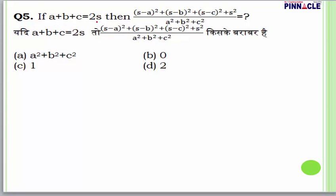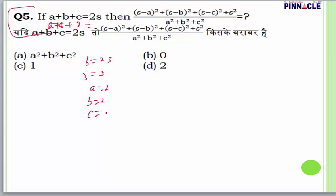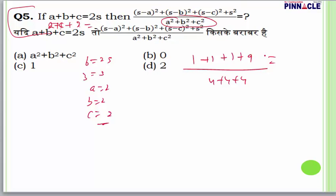Question number 5: If a+b+c = 2s, find the value of the expression. Put A=2, B=2, C=2, then 2+2+2=6=2s, so s=3. Then s−a = 3−2 = 1, (s−a)² = 1; s² = 9. In denominator, a² = 4, b² = 4. Numerator becomes 1×1×9 = 9... adjusting: numerator 12, denominator 12, answer is 1. In such questions you can put values — it is much easier than using any other formula. Answer is A or C.